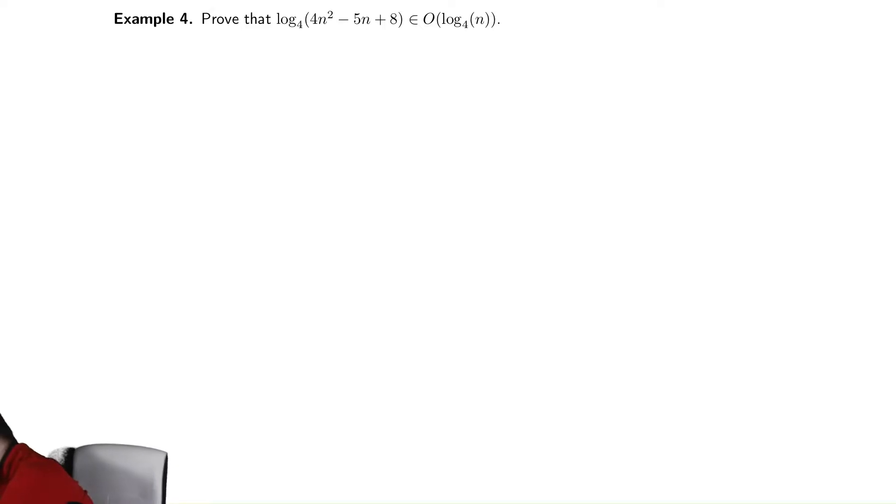So our first observation, this is going to be our second enumerated rule that we talked about before, which is when bounding above, drop negative terms.